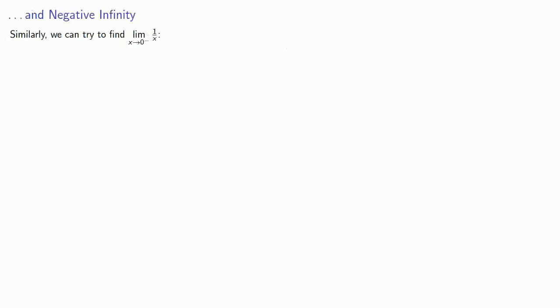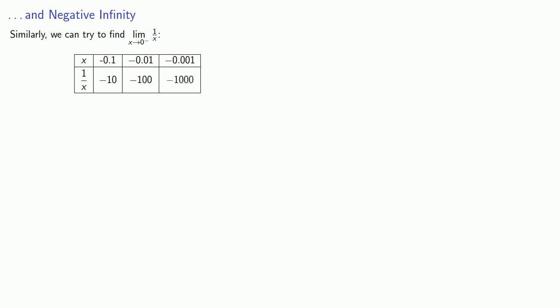Similarly, we might ask what happens to the limit as x approaches 0 from below of 1 over x. I'll take a look at x values that are close to but less than 0: negative 0.1, negative 0.01, negative 0.001, and I'll find 1 over x is minus 10, minus 100, minus 1000, and our values are becoming more and more negative without bound.